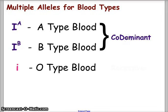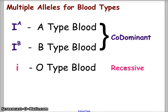A and B are codominant — when both are present, that's where you get AB type blood. O is a recessive trait, which means if it's paired with I^A or I^B, it will be masked. The only way you can get O type blood is if you have both recessive alleles in your genotype.